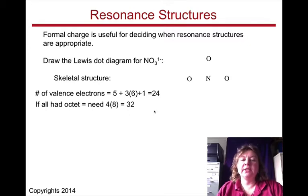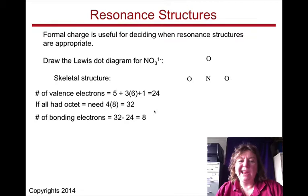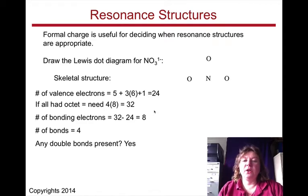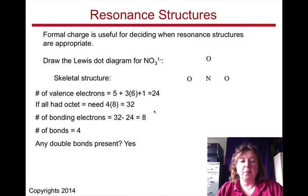If everybody has an octet, we need 32. Number of bonding electrons equals 8, 32 minus 24. That means that there are 4 bonds present, that means that if we need to connect 3 atoms and we need 4 bonds, there is going to be a double bond present.